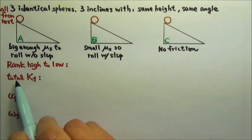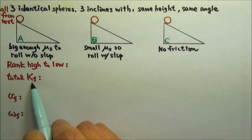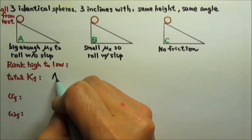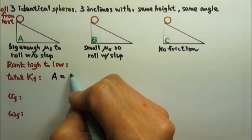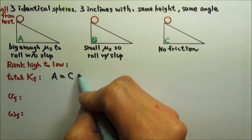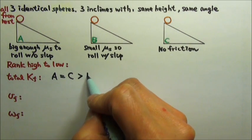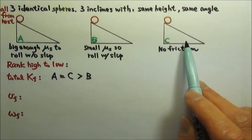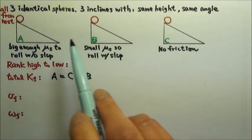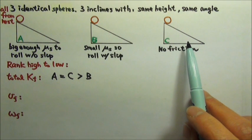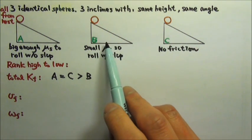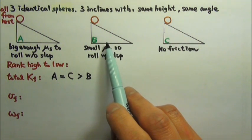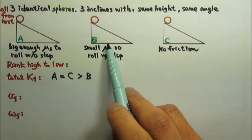So the ranking for the total kinetic energy is A equals C, and both are greater than B. For both A and C, no mechanical energy is lost to heat. However, for B, there is some mechanical energy being lost to heat.